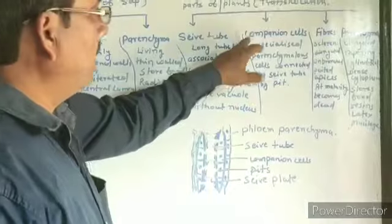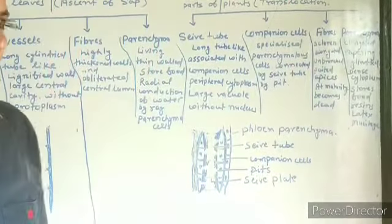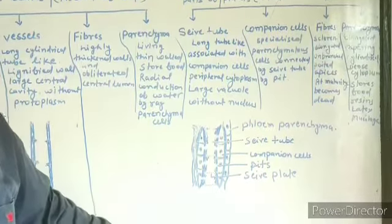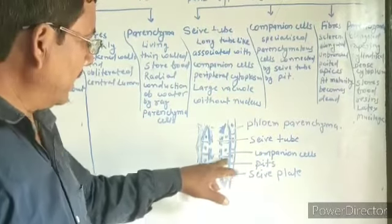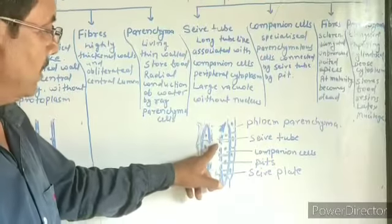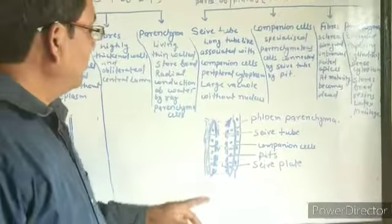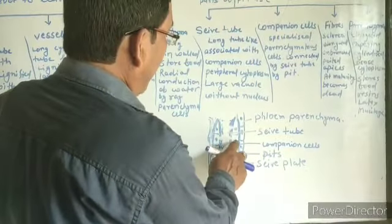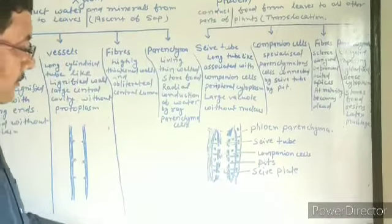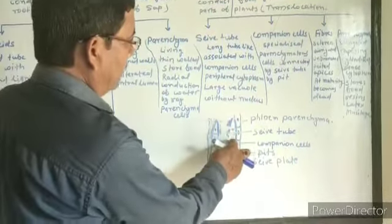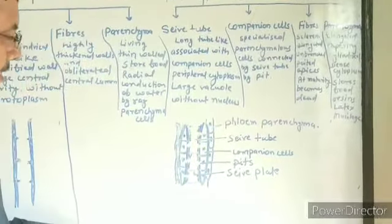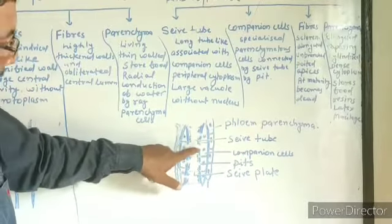The next phloem element is companion cells. Companion cells are associated with sieve tubes. They are made up of parenchymatous cells and are connected with sieve tubes by several plasmodesmata. All the functions of sieve tubes are controlled by companion cells, because sieve tubes do not contain a nucleus, while companion cells have a nucleus. Companion cells are specialized parenchymatous cells connected with sieve tubes by numerous pores.